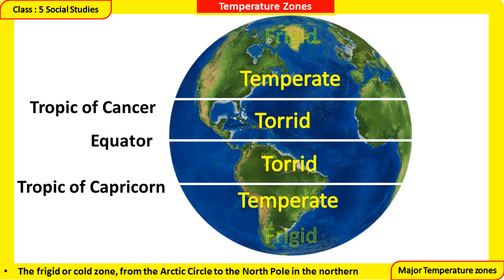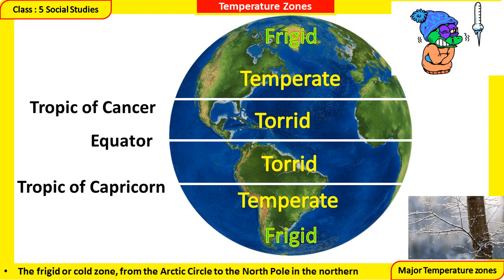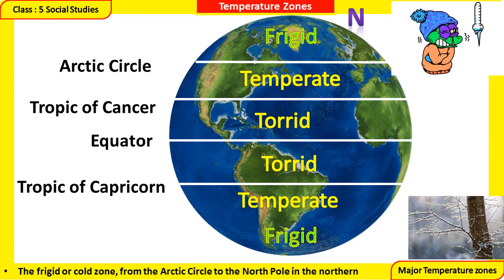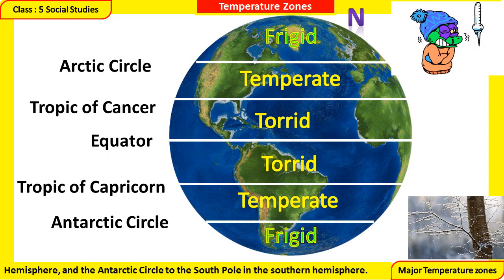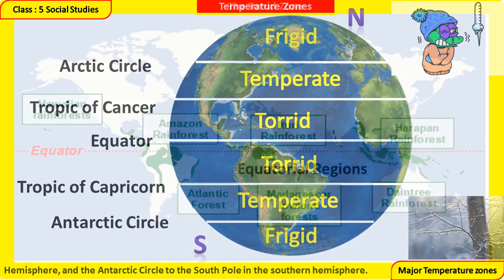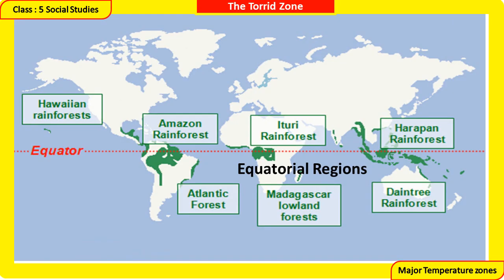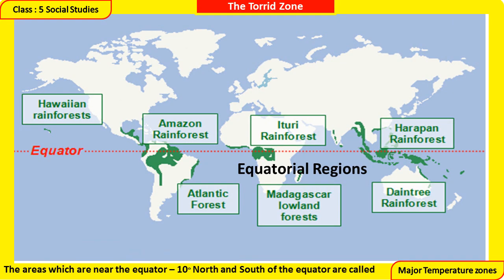The Frigid Zone — frigid means very cold — extends from the Arctic Circle to the North Pole in the northern hemisphere, and from the Antarctic Circle to the South Pole in the southern hemisphere. The Torrid Zone: areas near the equator, within 10 degrees north and south, are called the Equatorial Regions.